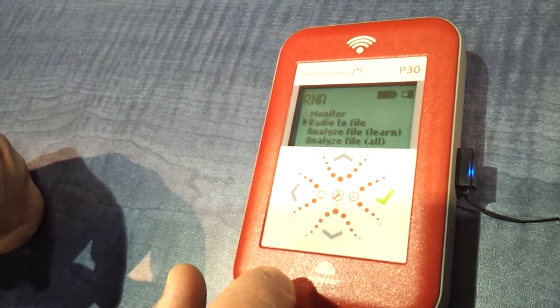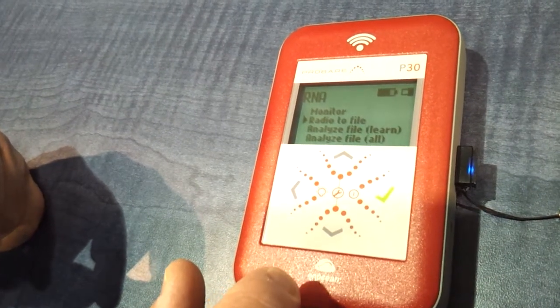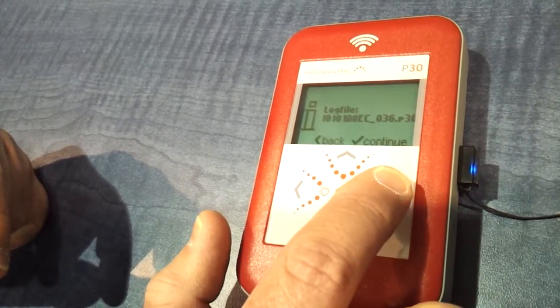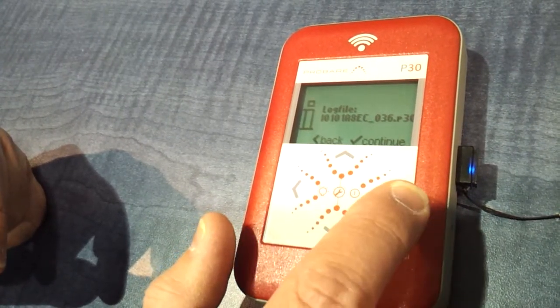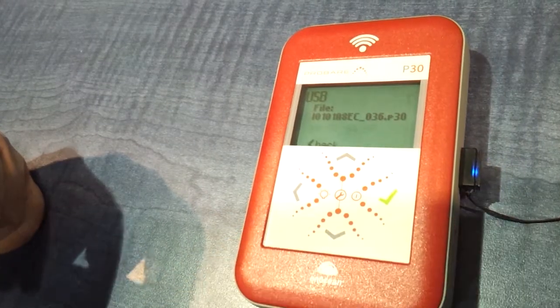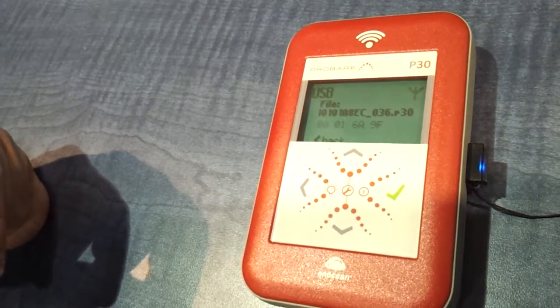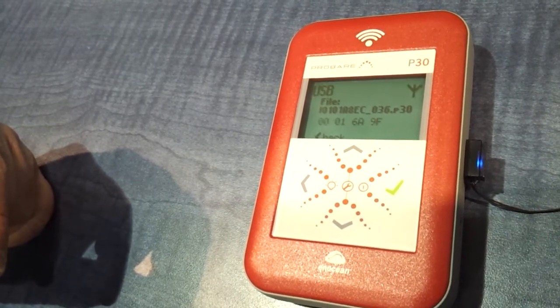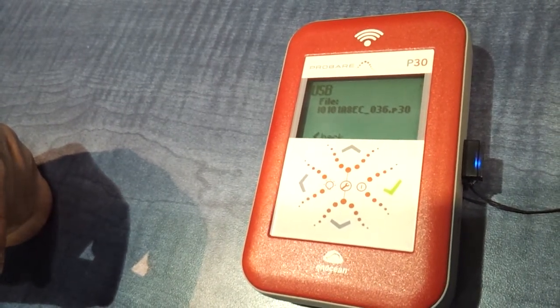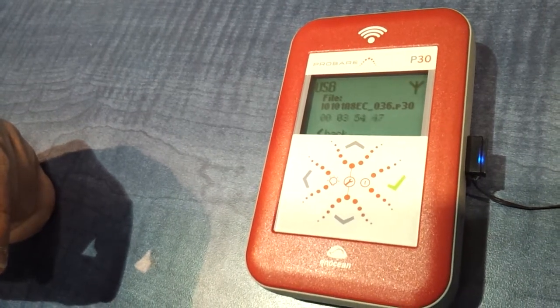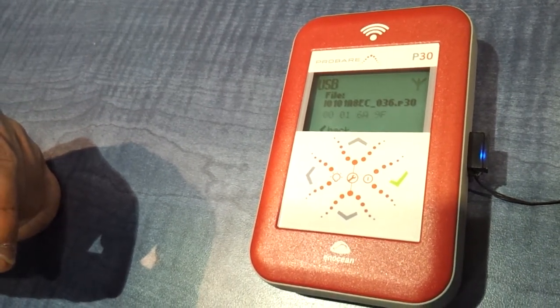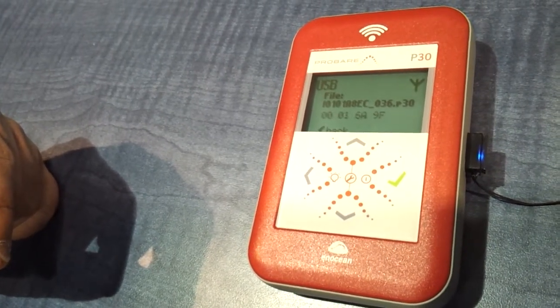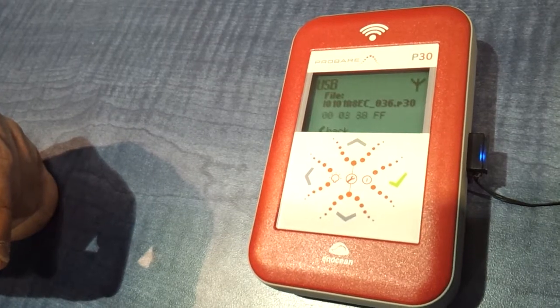If you want to do a logging for one hour, one day or one week, simply take radio to file and all the data goes to the USB stick applied to the P30 here on the right side. Again, you see the IDs, you see the blinking antenna symbol, all goes to the USB stick, the EnOcean traffic as well as the non-EnOcean frequency occupants. Let's make that for a while and see what we can do with those files.